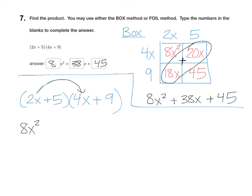Then do 2x times 9. 2x times 9 is 18x. Then we move to the inner terms. 5 times 4x would be 20x. And then lastly, we have the 5 times the 9. And 5 times 9 is 45.